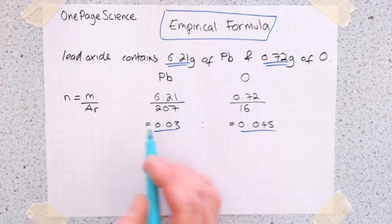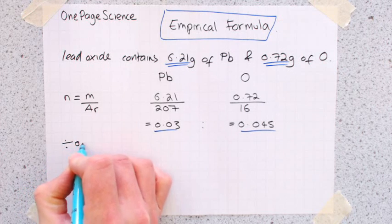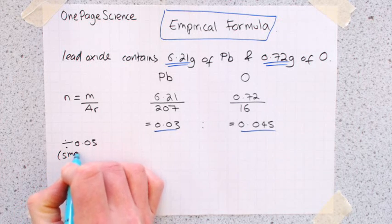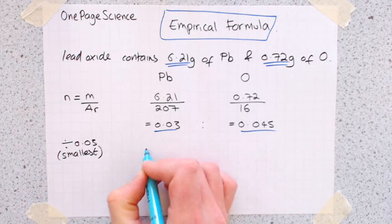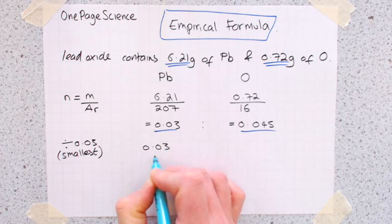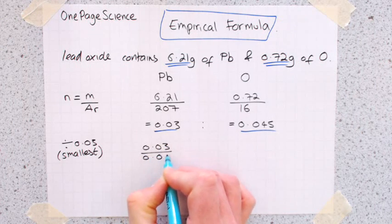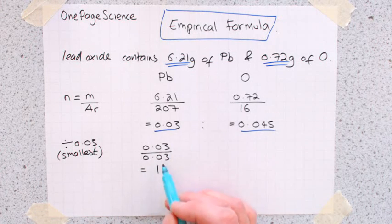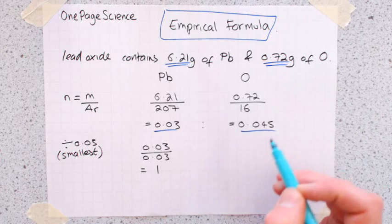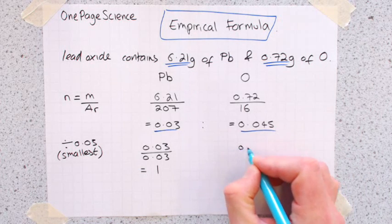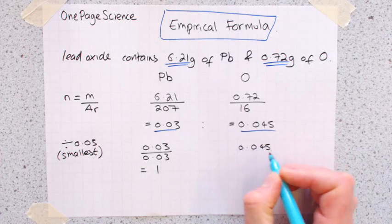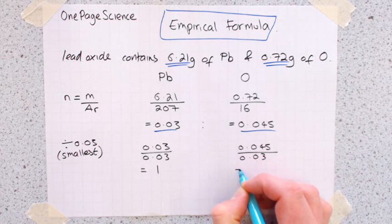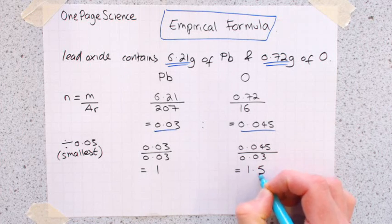So in this case, this is the smaller value. So over here, this is what we're doing. Dividing by 0.03, which is the smallest value. So 0.03 divided by 0.03 equals 1. And that's the reason we do that step, because one of our elements then becomes 1. And we do the same over here. 0.045 divided by 0.03, and that comes out at 1.5.